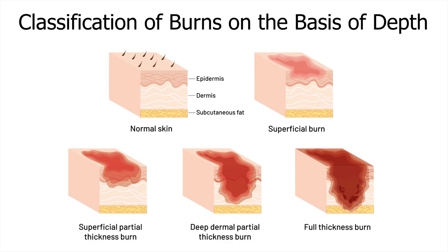Full thickness burns are characterised by evident involvement of the whole thickness of the skin and possibly subcutaneous tissue. This type of wound can only heal by contraction or with skin grafting.